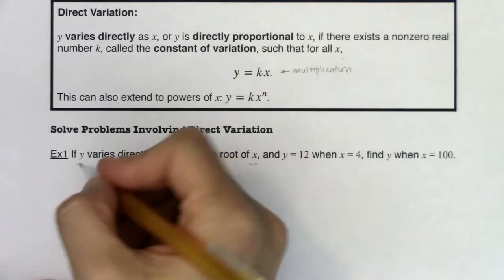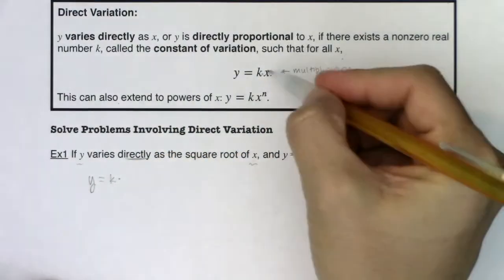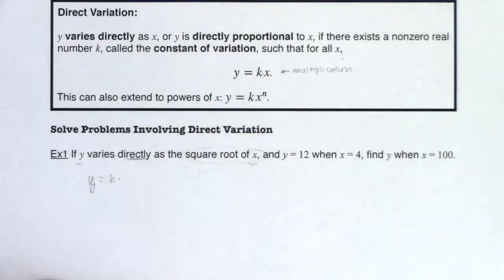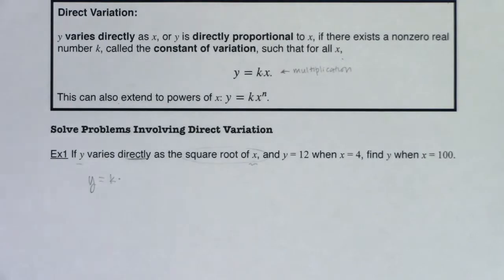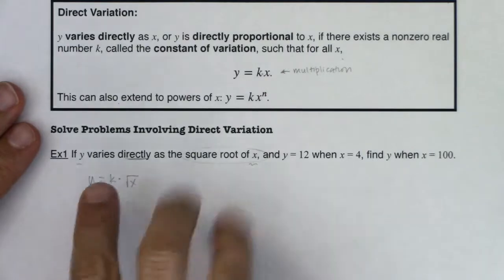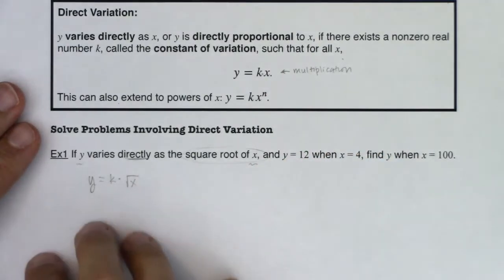We're going to have a constant of proportionality. So y will be equal to k times, now we won't do k times x here, because I was told to use the square root of x. And as we go through these word problems, we're just going to follow along with whatever the setup is. And in this case, it's the square root of x. So once you get your equation, how these problems kind of break down is there's always a complete set of information. There's always an ordered pair that you were given.